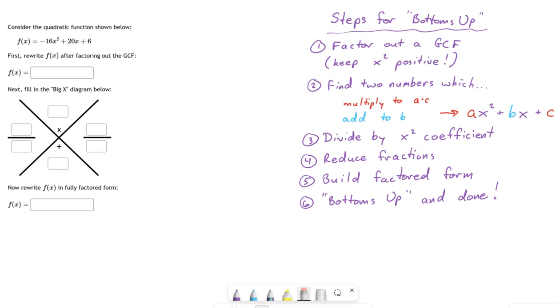Now, this is called the bottoms-up method, and you might not be familiar with this method. That's fine. If you like it, you can use it, but there are other ways to factor, and those are just as good. I think this one's a little quicker, so I tend to prefer this, but you see what you like.